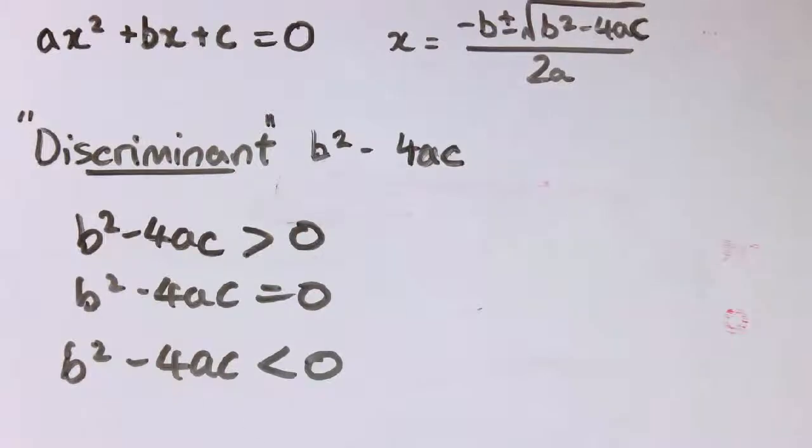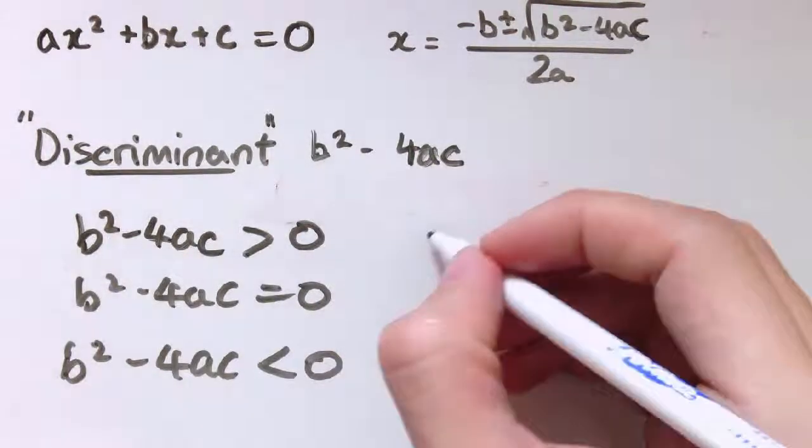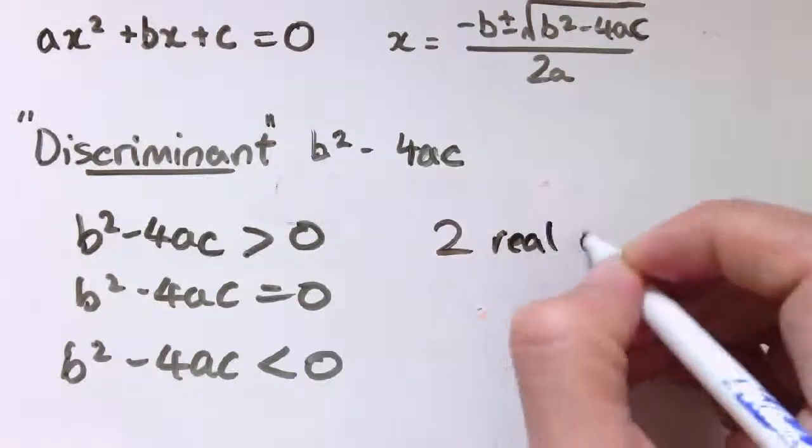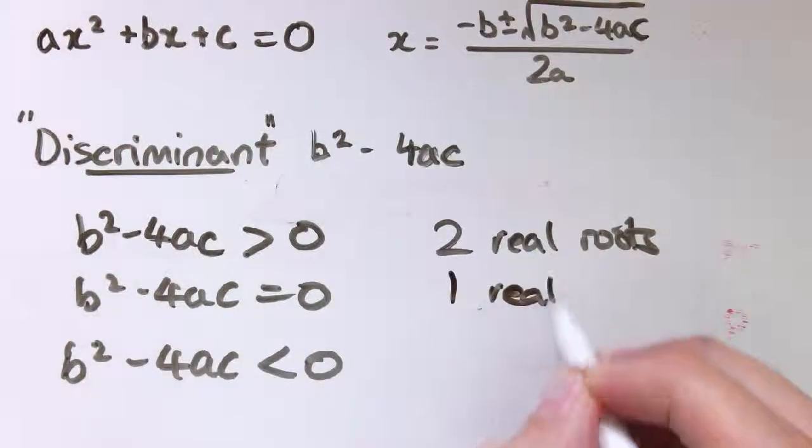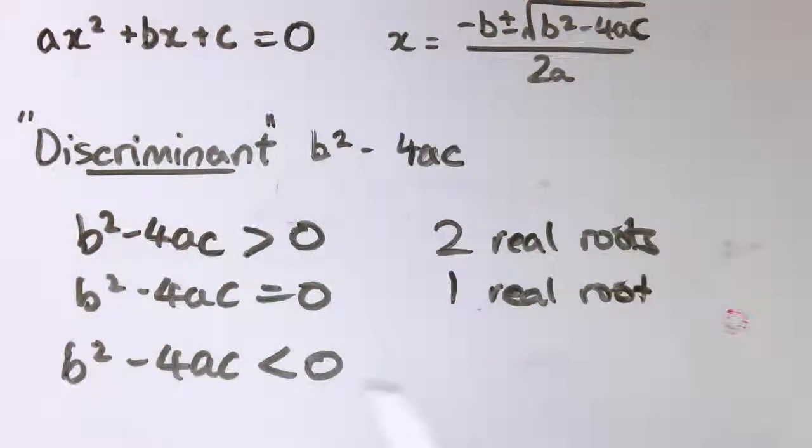So to summarize, we've got three cases. If the discriminant, b squared minus 4ac, is bigger than 0, I get two real roots. If it's equal to 0, I get one real root, and if it's less than 0, I have no real roots.